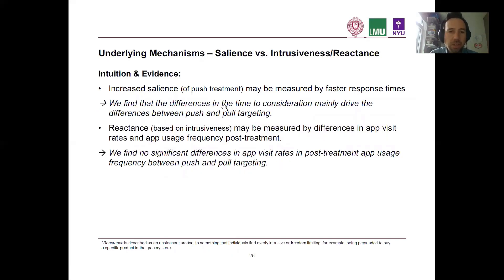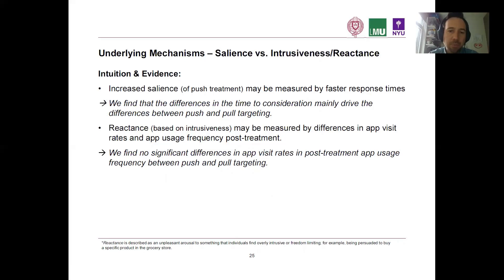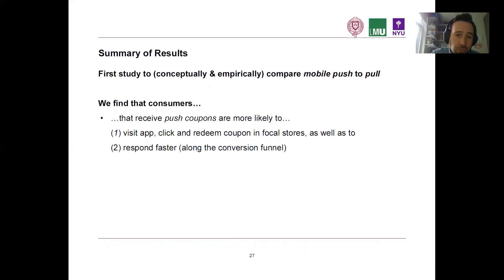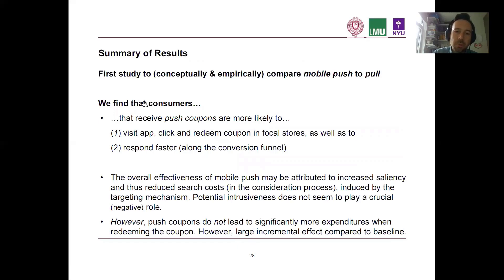Regarding the mechanisms, salience was measured by faster response times and reactance by differences in app visit rates. We find differences in the time to consideration, mainly driven by differences between push and pull. However, we do not find any differences in app visit rates or post-treatment app usage. Therefore, we conclude that the differences between push and pull are mainly driven by salience and not by intrusiveness.